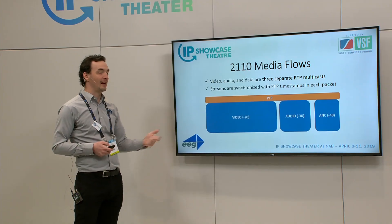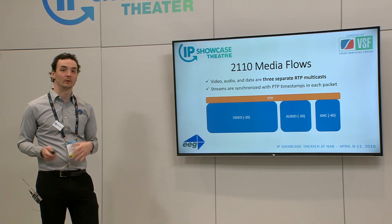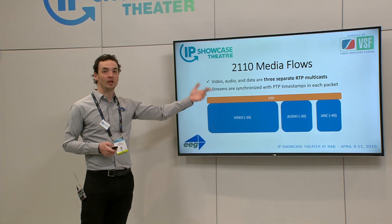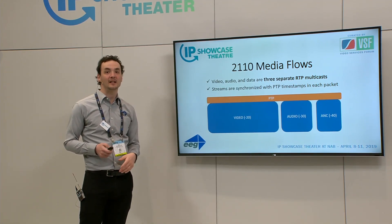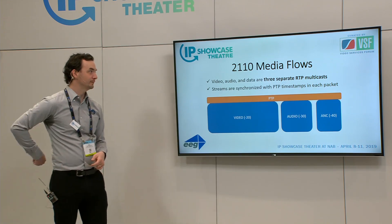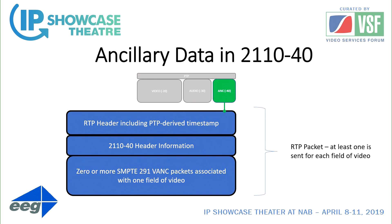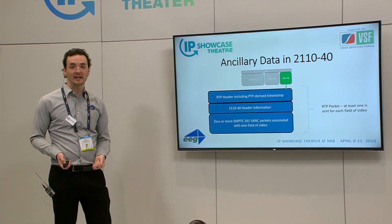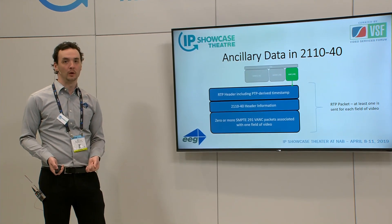The dash-40, dash-30, and dash-20 can be transmitted over the network in separate streams and put back together because they share a relationship to the same media PTP clock, so you can identify where each one belongs. The ancillary data has a PTP timestamp, header information, field number for interlaced versus progressive, and the core payload is basically the same VANC packets that you have in SDI video — VANC and HANC data according to the SMPTE 291 standard.